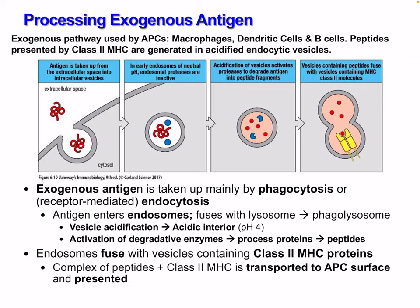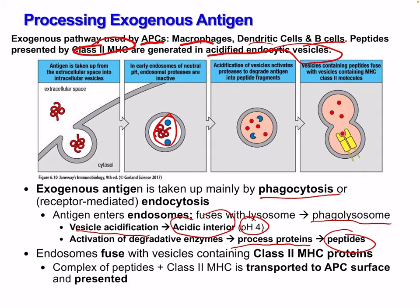The exogenous pathway is used by antigen-presenting cells, which are macrophages, dendritic cells, and B cells. Peptides are presented by class 2 MHC and are generated in acidified endocytic vesicles. Exogenous antigen is taken up mainly by phagocytosis or receptor-mediated endocytosis. Antigens enter the endosomes and fuse with lysosomes. We have vesicle acidification with an acidic interior at a pH of around 4. The activation of proteolytic enzymes allows us to process the proteins into peptides.